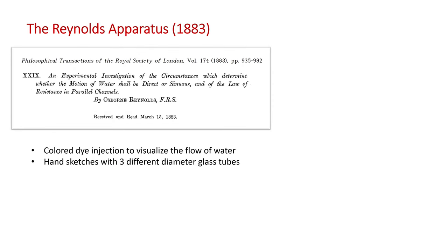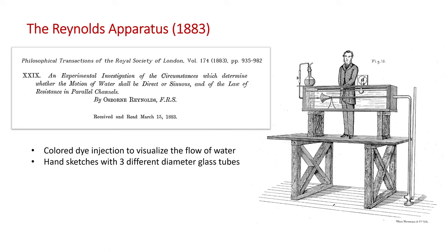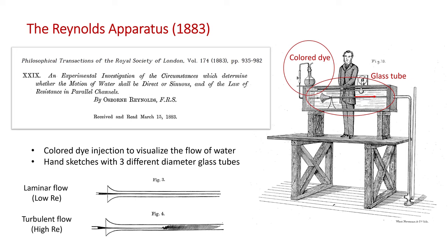This is Reynolds' famous paper, and this is an etching taken from that paper showing his apparatus. His experiment used a tank of water, and he could watch the water flow inside a glass tube. He injected colored dye at the inlet of the pipe so he could see the flow patterns, and he made simple hand sketches of what he saw. At low Reynolds numbers, the injected dye stream was carried in a straight line with the flow, but at higher Reynolds numbers, the stream of dye was mixed by the vortices that formed inside the pipe.